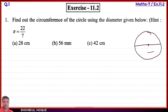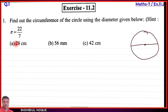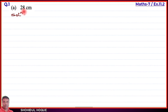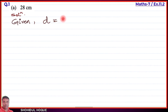Circumference is denoted by C. The symbol pi has a value of 22 by 7. For part number A, the diameter is 28 centimeters. The given diameter is written as D equal to 28 centimeters, where D is the short form for diameter.